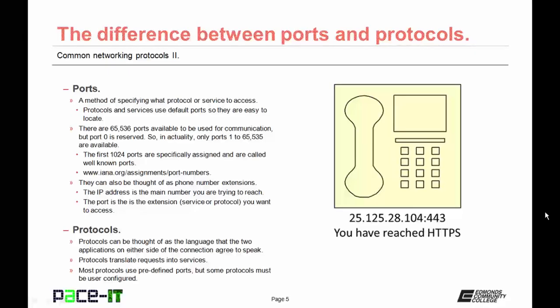The first 1,024 ports are specifically assigned and are called well-known ports. If you would like to learn more about those, you can check out the iana.org website. Ports can be thought of as a phone number extension — the IP address is the main number you are trying to reach, and the port is the extension for the service or protocol that you want to access.